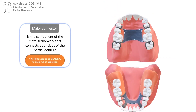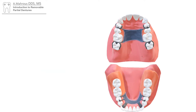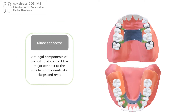The major connector is the component of the metal framework that connects both sides of the partial denture. The minor connectors, highlighted in green, are the smaller rigid connectors that connect the major connector to the other components of the partial.